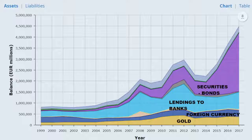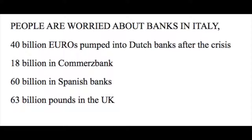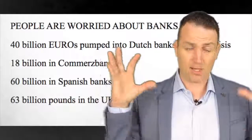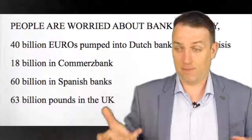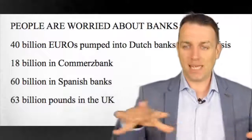Why did the euro decline so much in value? This is the European Central Bank balance sheet, and you can see it expanded about seven times in the last 15 years and is still expanding. We should be lucky we haven't had more inflation and more currency value loss. What did the banks do? 14 billion euros was pumped into Dutch banks after the crisis, 18 billion into Commerzbank in Germany, nationalizing ABN AMRO and SNS Real in the Netherlands, 60 billion in Spanish banks, 63 billion pounds in UK RBS. That happened just eight or nine years ago, where governments were piling in to save the banks.